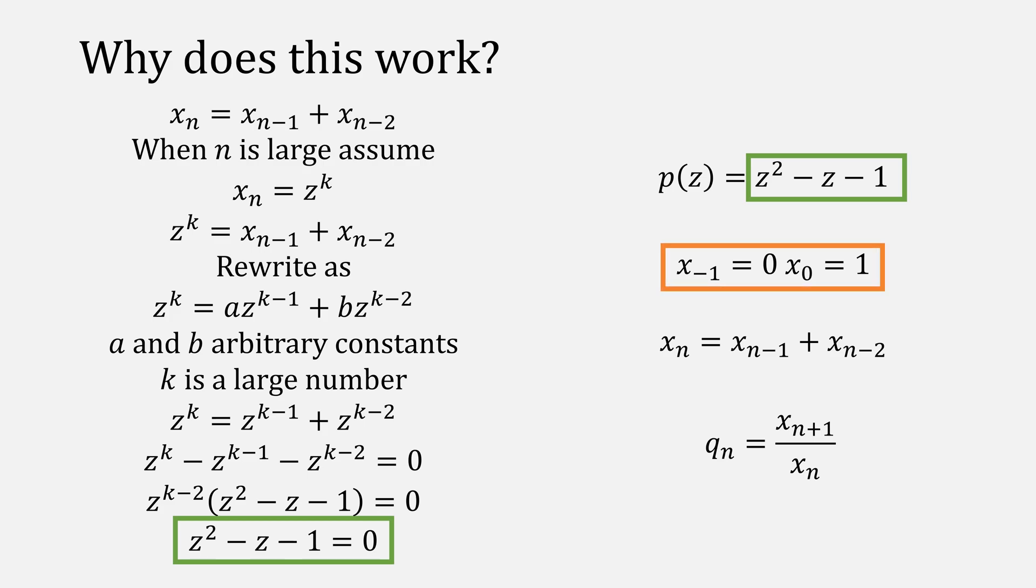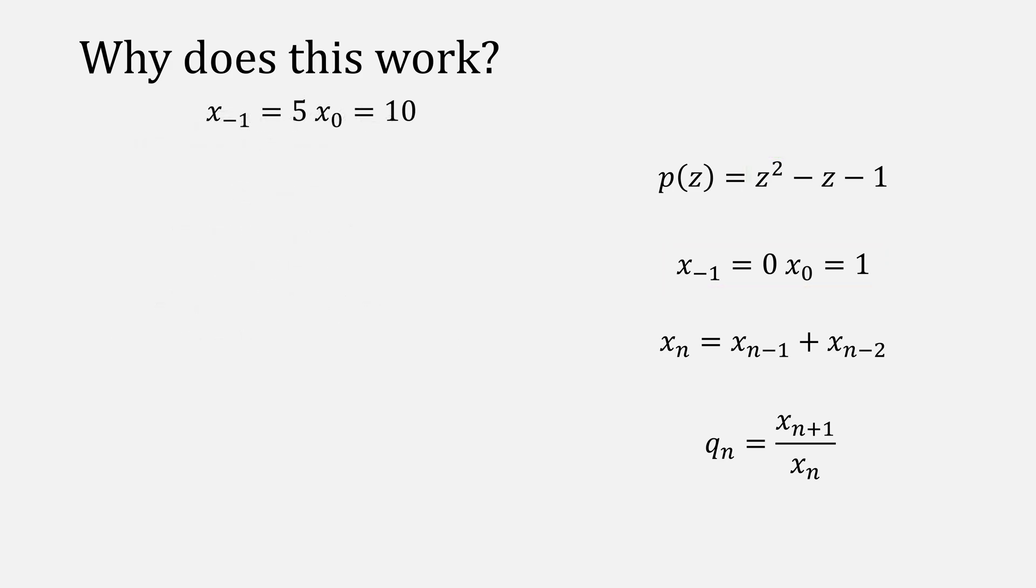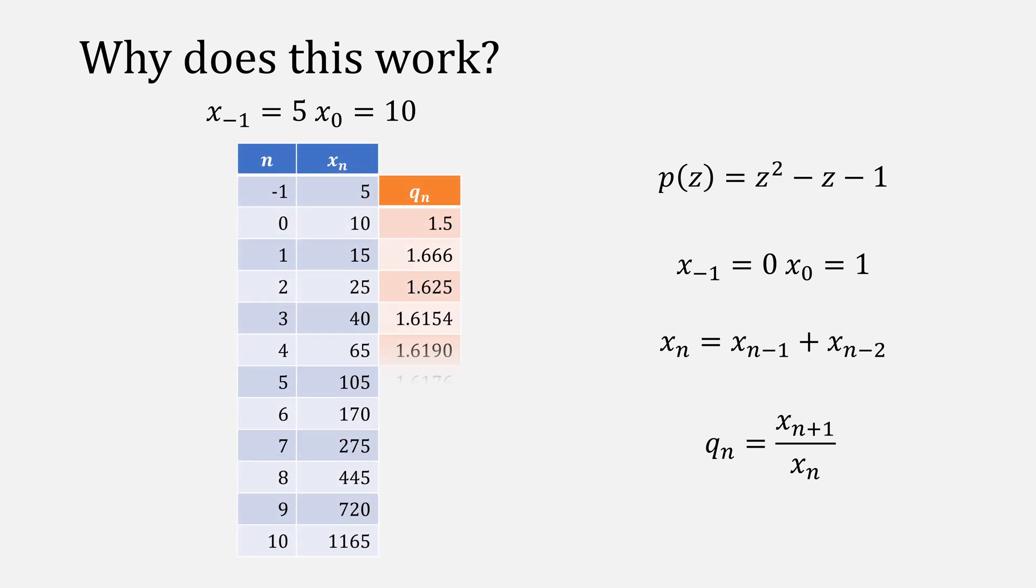But our numbers that we started with were 0 and 1. Does that really matter? What if we start with 5 and 10? Plug them in to compute our series and then compute our q values and we still find the number of 1.618.